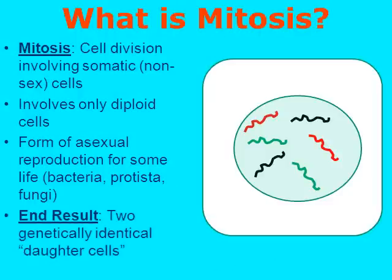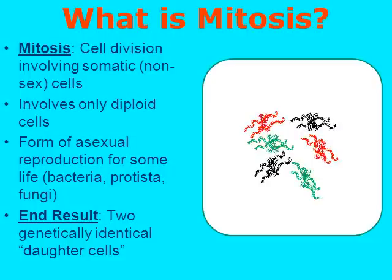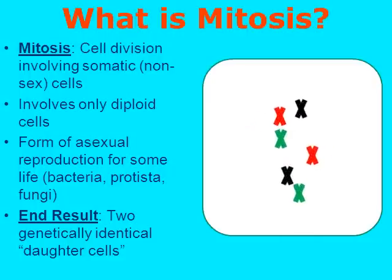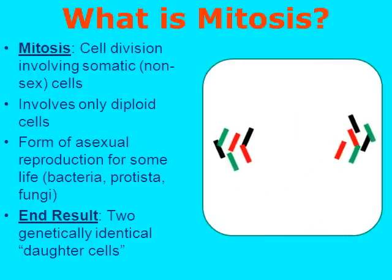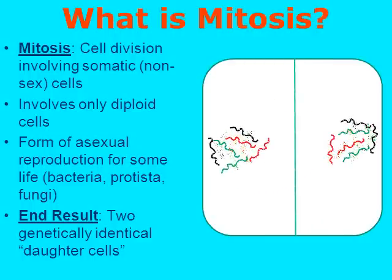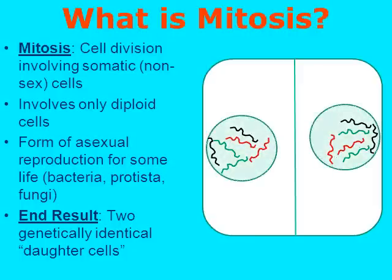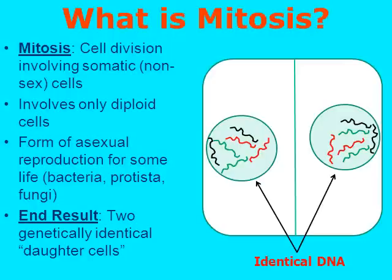The end result are going to be two genetically identical daughter cells. Here's that same animation again: the chromatin just copied itself, the nucleus dissolves, the chromosomes are forming, the chromosomes are being pulled to the middle of the cell, the chromatids are being pulled apart, cytokinesis divides the cell, the chromatin uncoils, and the nucleus reforms. When we examine the two nuclei, we can see the DNA is identical — two red strands, two black strands, and two green strands of DNA. So mitosis makes exact copies.